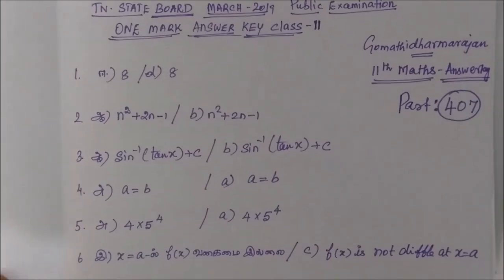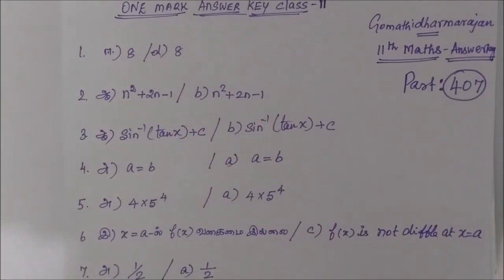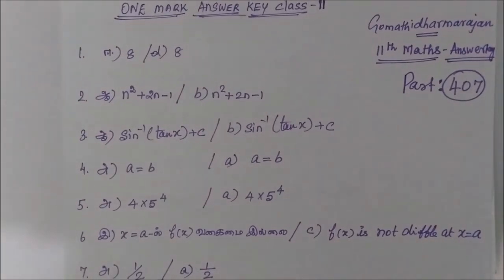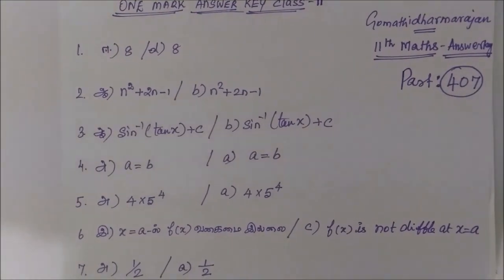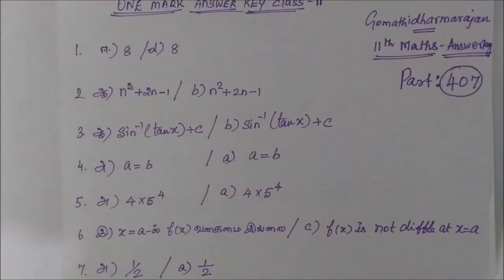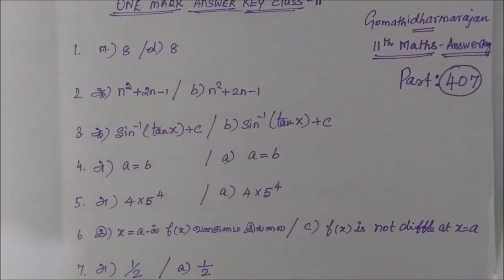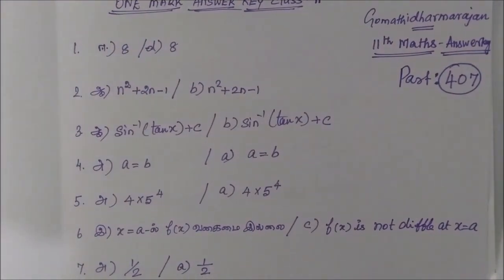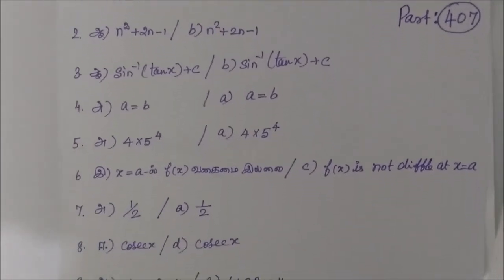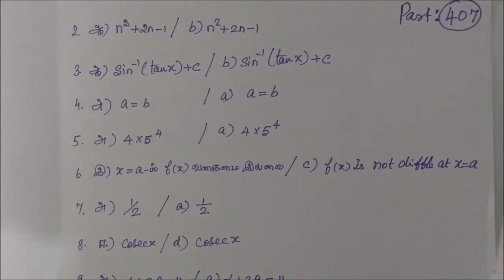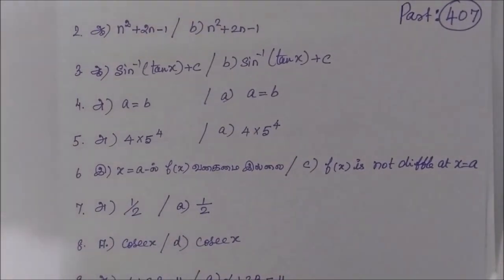Then for question number 4: option A, A equal to B. Then for question number 5: option A, 4 into 5 power 4. Question number 6: option C, f of x is not differentiable at x equal to A.